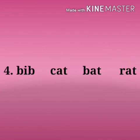Now the fourth one. The first word is B-I-B, bib; C-A-T, cat; B-A-T, bat; R-A-T, rat. In this group, cat, bat, and rat share the '-at' sound, while bib ends in '-ib'. So bib is the odd one out. We will cross B-I-B, bib.